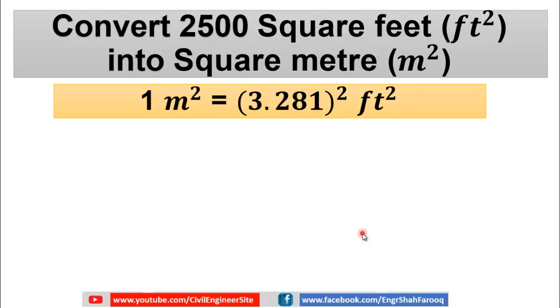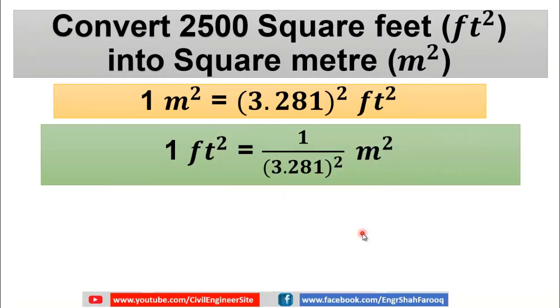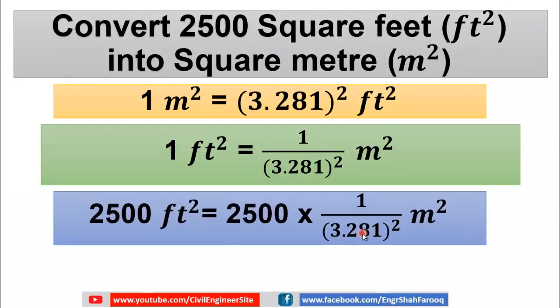As we have already discussed in the first slide, one square feet is equal to 1 over (3.281)² square meter. So to convert 2500 square feet into meter square, just multiply it by 1 over (3.281)², or you can say divide 2500 by (3.281)².